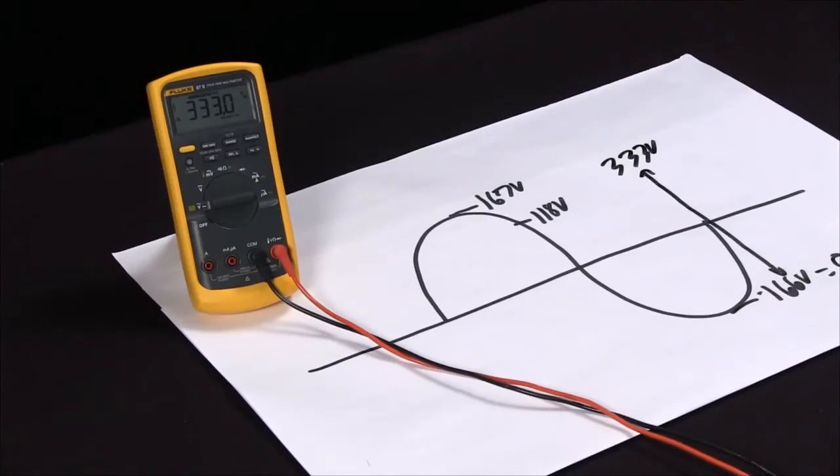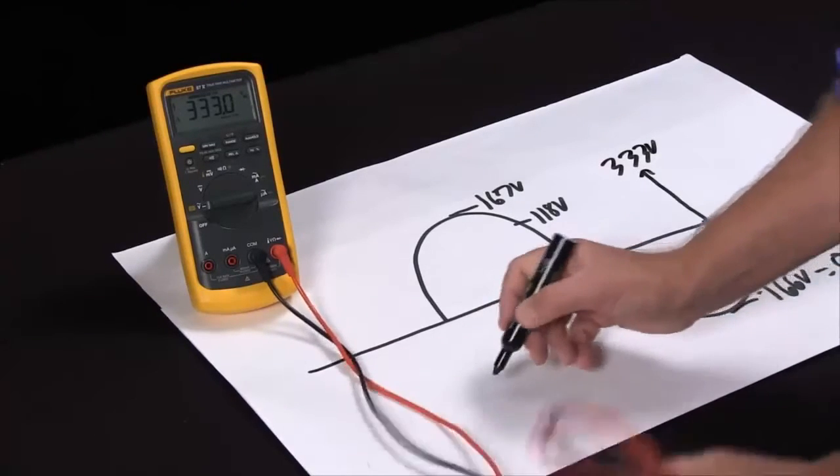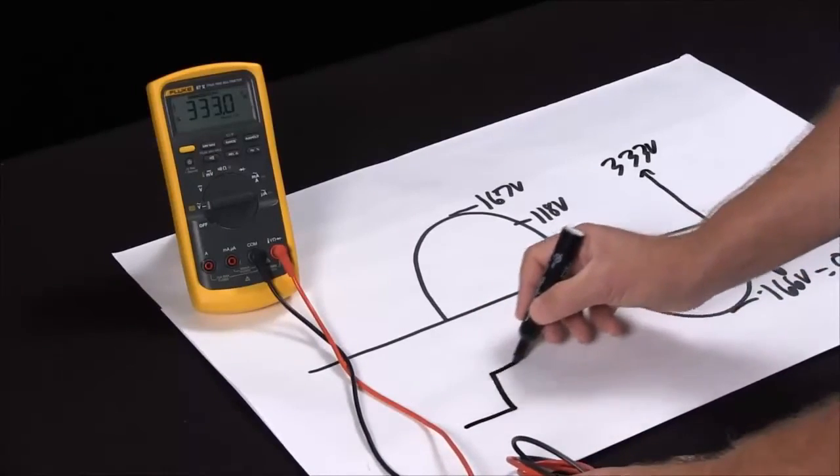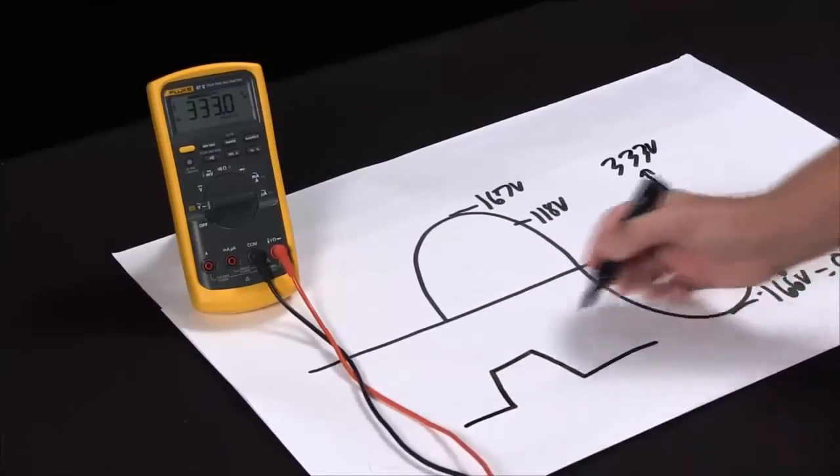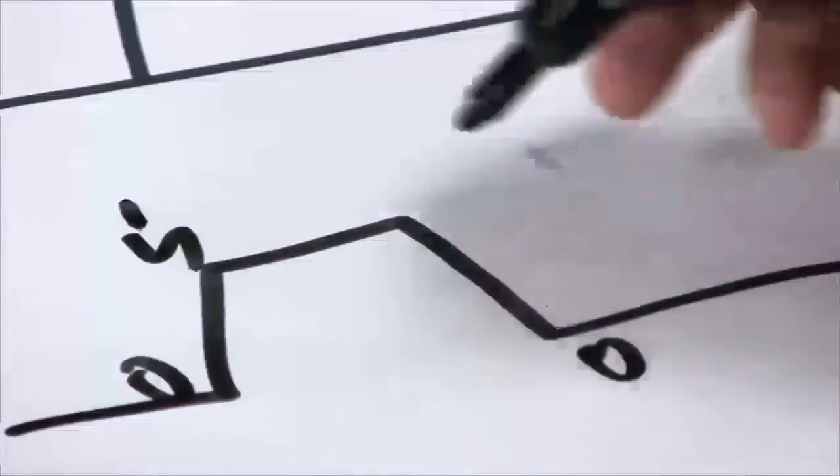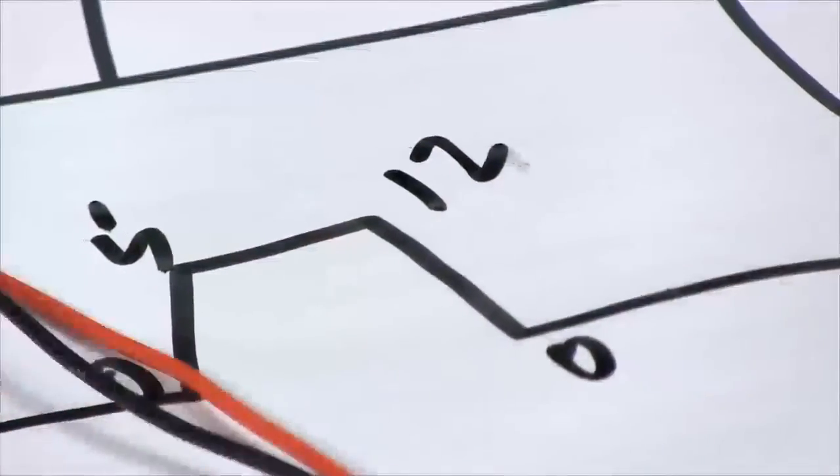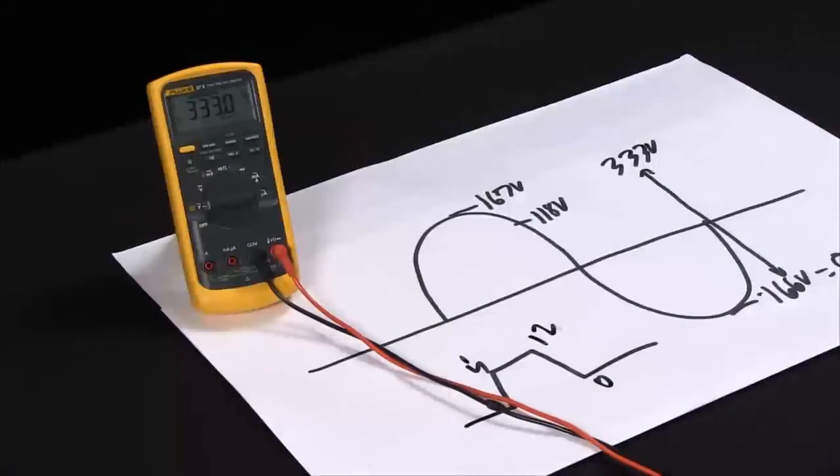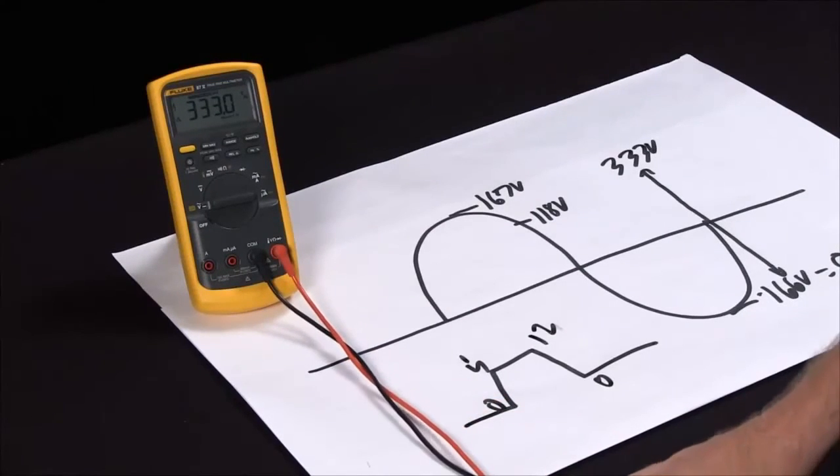Where for a sine wave this might not be so handy, when you're working on a square wave coming off an encoder, what you really want to see is, is this zero to five volts, is it zero to 12 volts? So by having that relative mode and the peak min max, you'll be able to check your square waves a whole lot better.